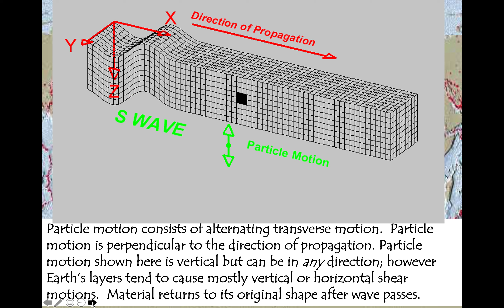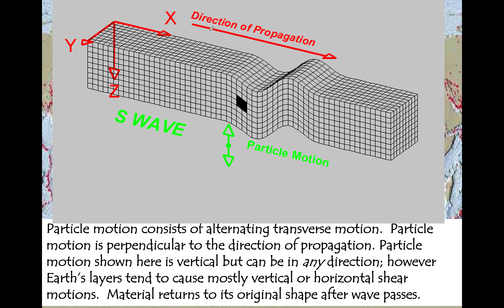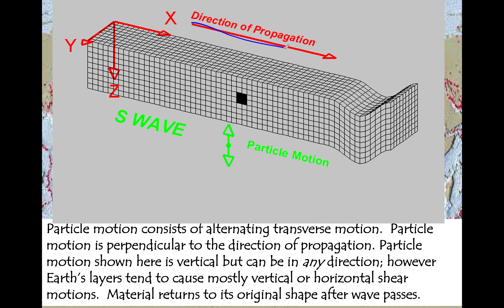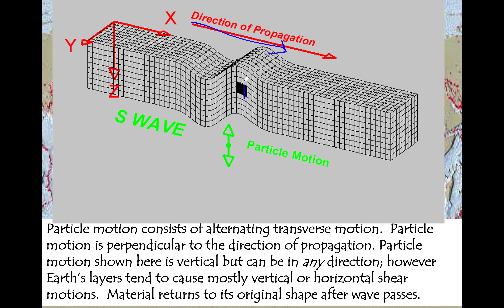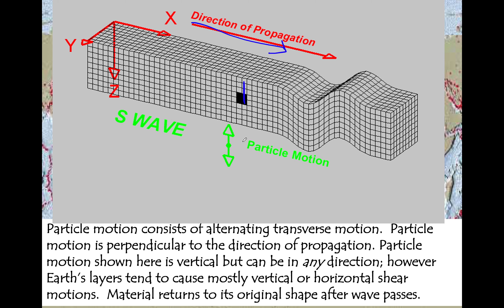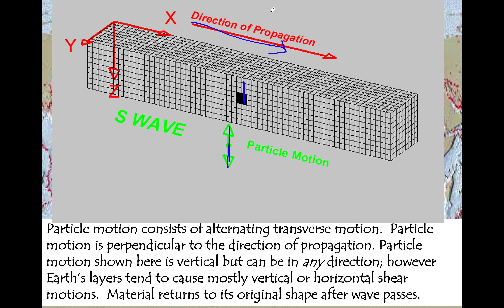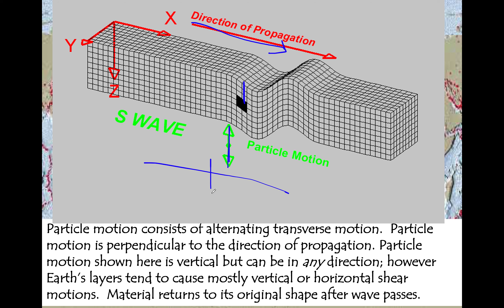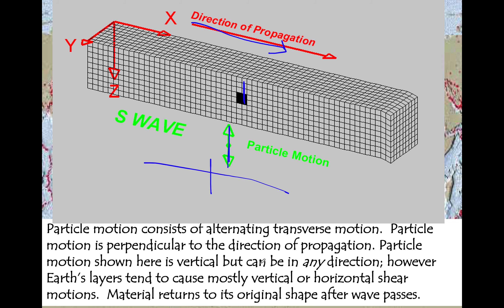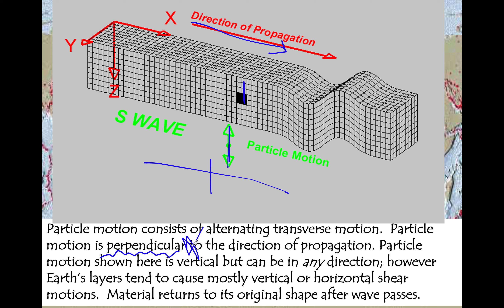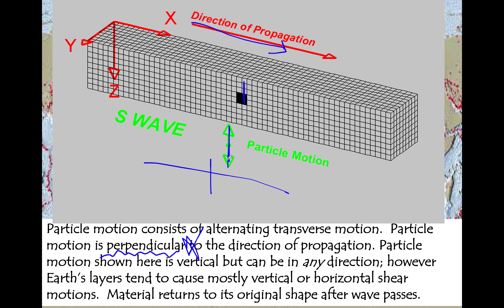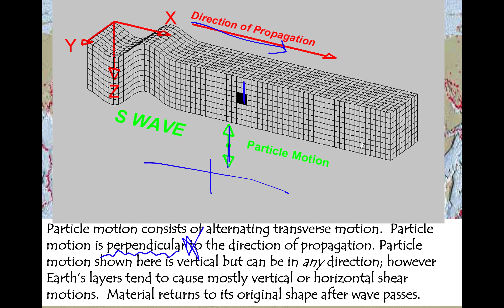Looking at this animation, the direction of wave propagation goes that way. If you look at this particle, it goes up and down. So if you compare the direction of particle motion and the direction of wave propagation, they are perpendicular to one another. Find that word, underline it, highlight it, put a star next to it — that's really important. S waves: the particles move perpendicular to the wave propagation.